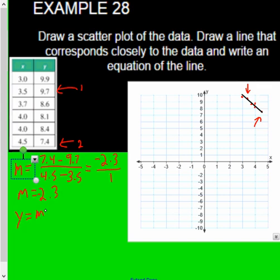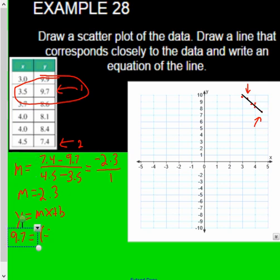Substitute this back into y equals mx plus b. I'll use this point right here. So my y value is 9.7, my slope is negative 2.3, my x is 3.5 plus b.